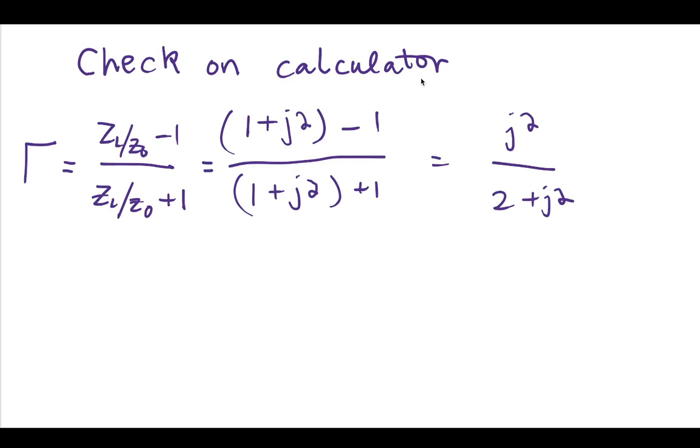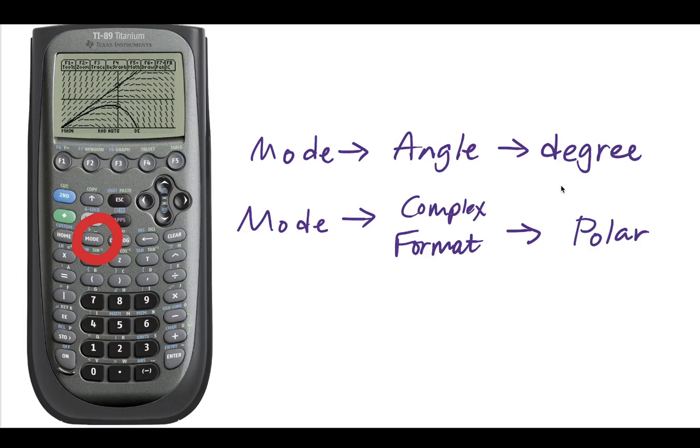Now let's check this using a calculator. So into our calculator, we can apply this formula to get this as our reflection coefficient. Now, this is the rectangular result, but we know that we usually put our reflection coefficient in polar form.